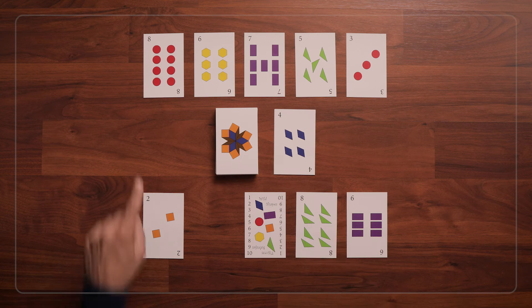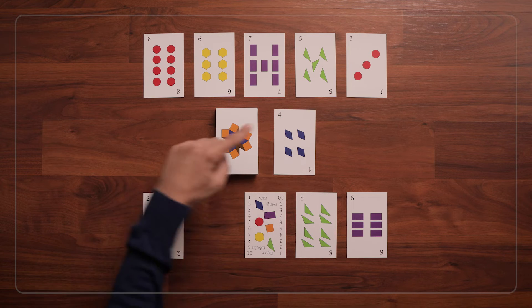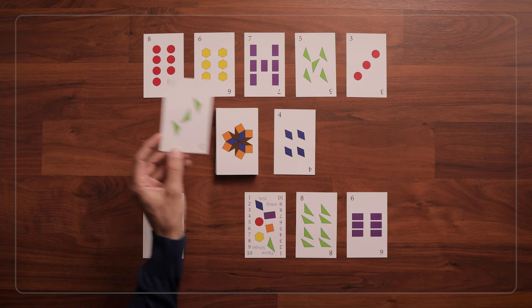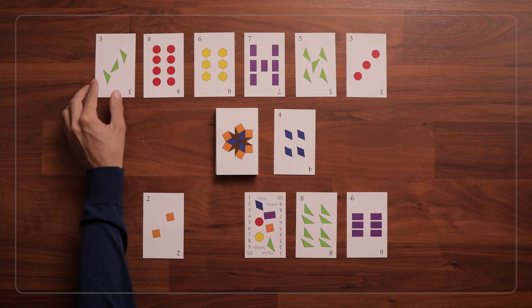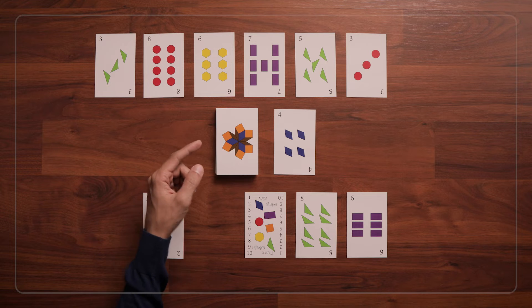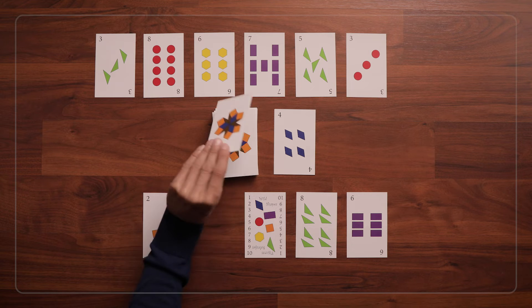Now the next player goes, and they don't have any 4s or rhombuses, so they have to draw from the center pile. If they can play that card, then they'll go ahead and play it. But if not, you can either just move on to the next player, or you can play that they have to keep drawing from the center pile until they get a card they can play.